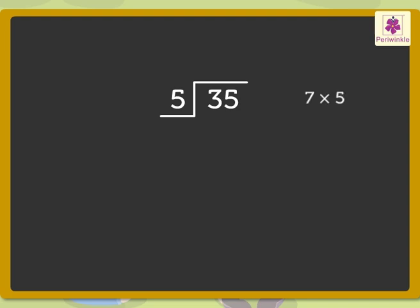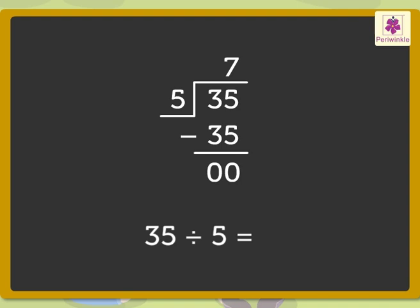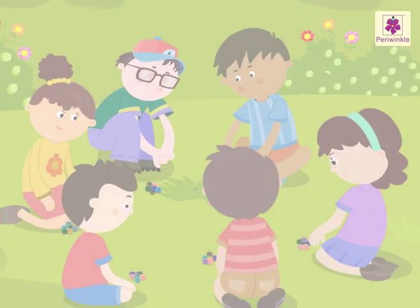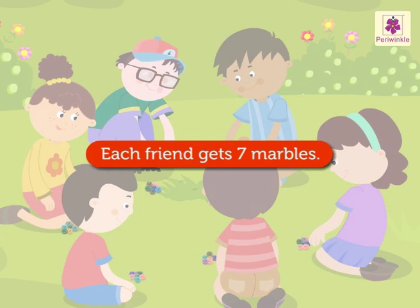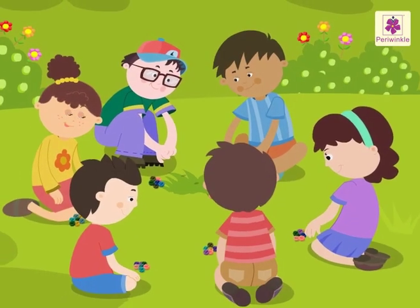We know seven into five is equal to 35, so we will write seven as the quotient. Now write 35 below the dividend here. Let us subtract 35 from the dividend. We get zero as the remainder. So we say 35 divided by five is equal to seven. Thus each friend gets seven marbles. Look, they are so happy!